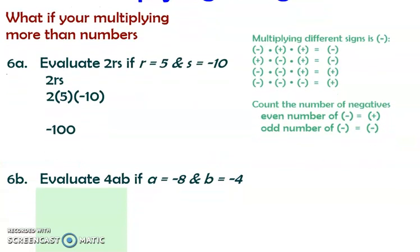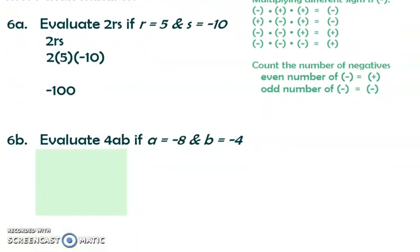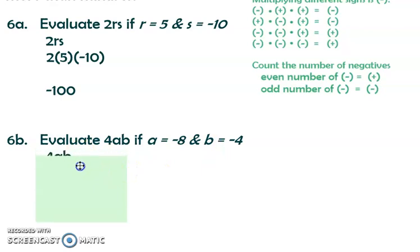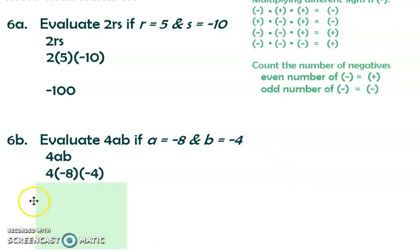Here's another evaluate problem. Remember, evaluate means you plug in the numbers and simplify all the way down. Evaluate 4ab where a = negative 8 and b = negative 4. We substitute to get 4 times negative 8 times negative 4. There are two negatives — an even number — so the answer is going to be positive. Multiplying it out: negative 32 times negative 4 gives positive 128.